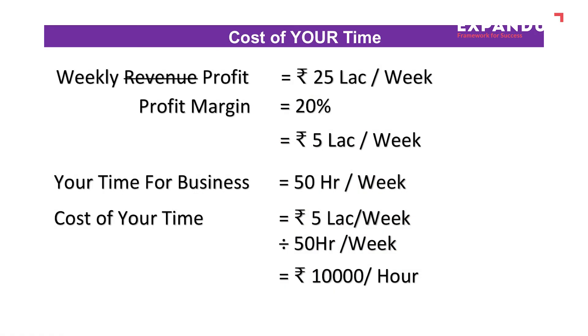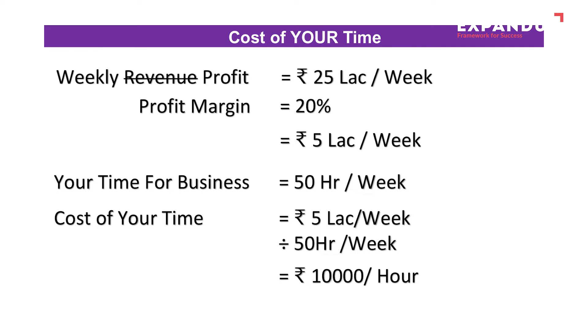Some people may argue that we should do this calculation based on profit and not on sales. Let's try that. Assuming a 20% profit margin, this business earns 5 lakh profit per week from 25 lakhs revenue. In such a case, the cost of time is 5 lakhs divided by 50 hours, equal to 10,000 rupees per hour. Ideally, the business owner should be delegating tasks which could be accomplished by an employee who costs less than this hourly cost.